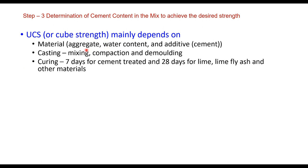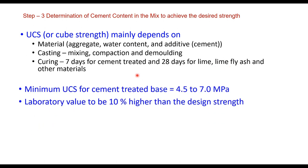The third step is to determine the cement content in the mix to achieve the desired strength. Unconfined compressive strength — or cube strength — is determined and depends on material properties, casting (mixing, compaction, and demolding), and curing. Seven days curing is sufficient for cement treated material; 28 days curing is required for lime, lime fly ash, and other slow-gain stabilizers. The minimum UCS for cement treated base per IRC code is 4.5 to 7 MPa, and the laboratory value should be 10 percent higher than the design strength.